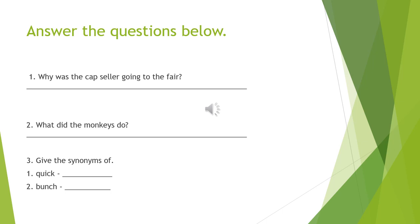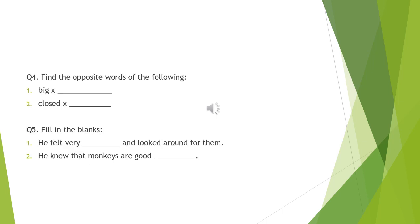Now children, I want you to answer the questions from the hints that I have given. I have added two more questions which I want you to try on your own. Question 4: Find the opposite words of the following — Number 1: Big, Number 2: Close. The opposite words for these two words are in the passage itself; I want you to find them out. Question 5: Fill in the blanks. Good luck with your activity and try your best. Read the passage carefully and find the perfect answer.